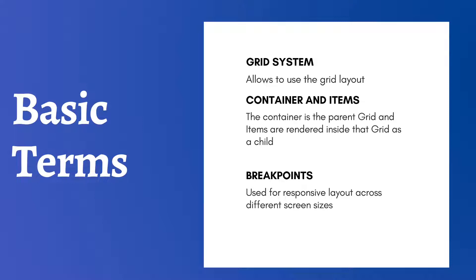The item is the child grid inside the container. The grid container is based on a 12-column grid layout, meaning we have 12 columns on our web page to place the grid layout inside. We can align that layout within responsive breakpoints.